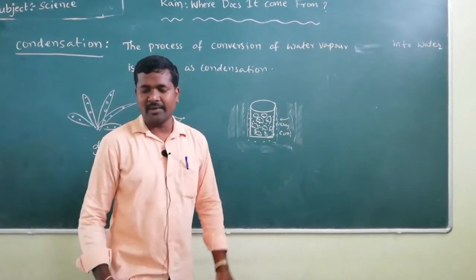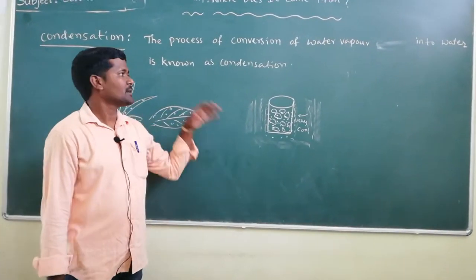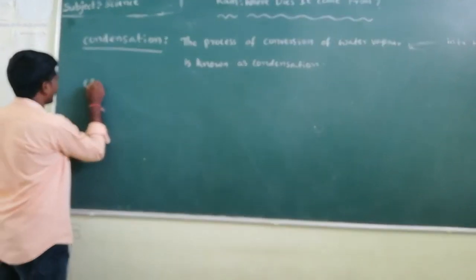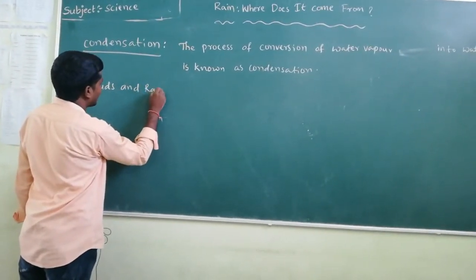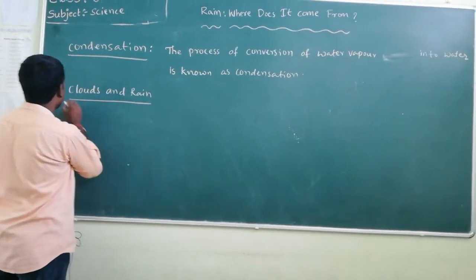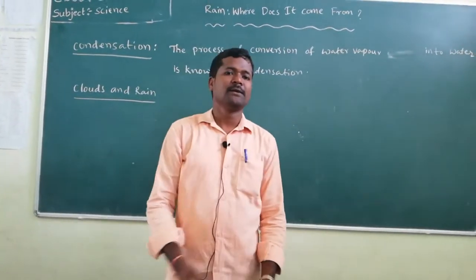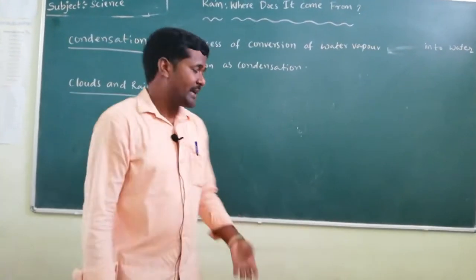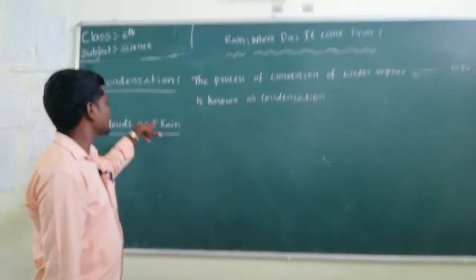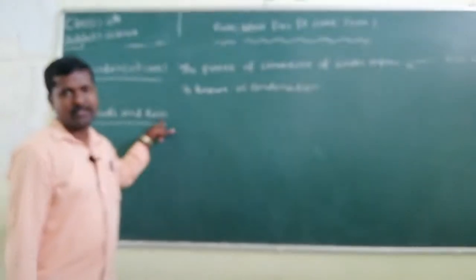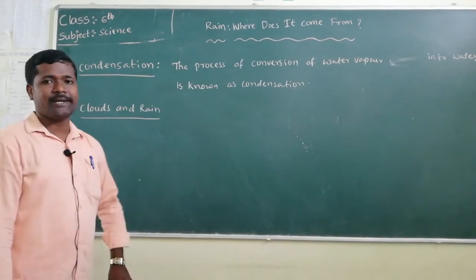In the same way, we can understand cloud and rain formation. Evaporation process is involved in the formation of clouds. Condensation process is involved in the formation of rain. These two processes are very, very important in the formation of clouds and rain.